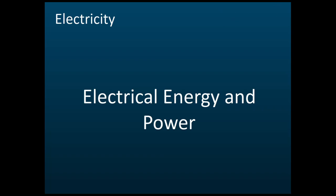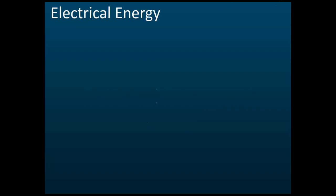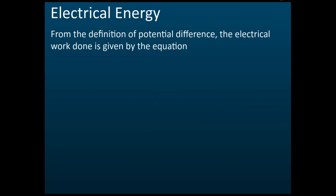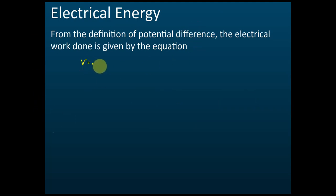Okay, electrical energy and power — let's start with electrical energy first. From the definitions of potential difference, what is the formula for potential difference? V = IR is not from the definitions of potential difference — that is from Ohm's Law. So there is another formula for potential difference which is derived from the definitions of potential difference.